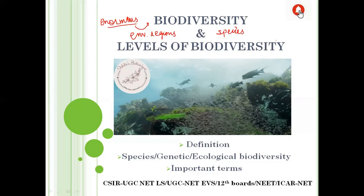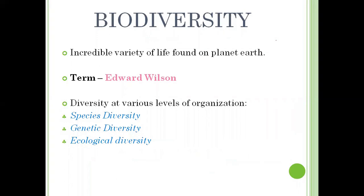Now, what does biodiversity mean and who gave the term biodiversity? Basically, biodiversity means the incredible variety of life found on planet Earth. It includes different kinds of species such as insects, fishes, vertebrates, invertebrates, molluscs, reptiles, amphibians, angiosperms, fungi, etc. They all constitute biodiversity.